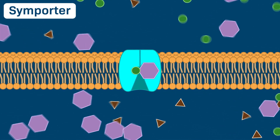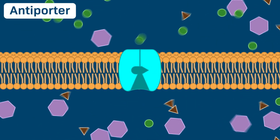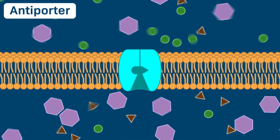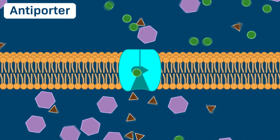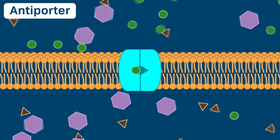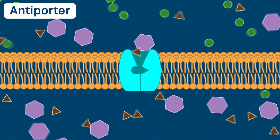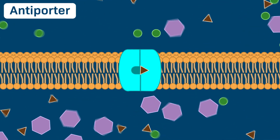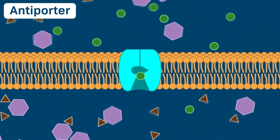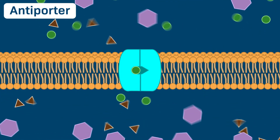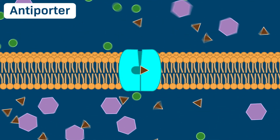Let's consider a third type of carrier protein, called an antiporter. Similar to symporters, antiporters also carry two types of solutes. However, antiporters couple the transport of two solutes in opposite directions across the membrane. In this example, the antiporter ferries the solutes represented by the green circles out of the cell, and the solutes represented by the brown triangles into the cell.